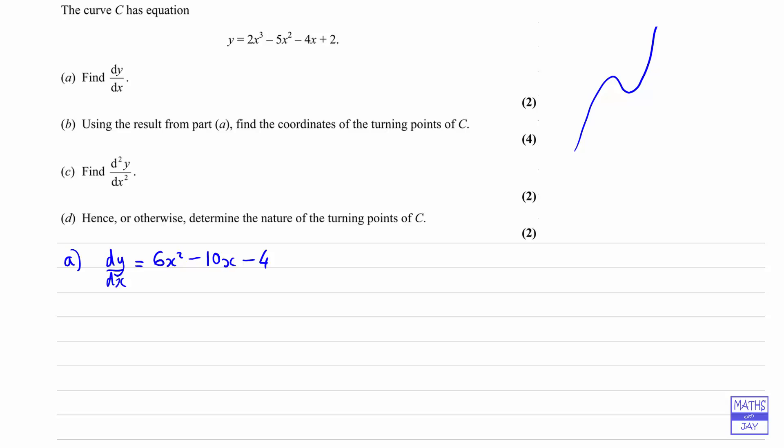In part B we want to find the coordinates of turning points, so turning points are going to occur where the gradient is 0, so where the derivative is 0. So we can write down that 6x squared minus 10x minus 4 is 0. It's always easier to solve a quadratic like this if we divide through by a common factor. So let's divide through by 2. So we're going to have 3x squared minus 5x minus 2 is 0.